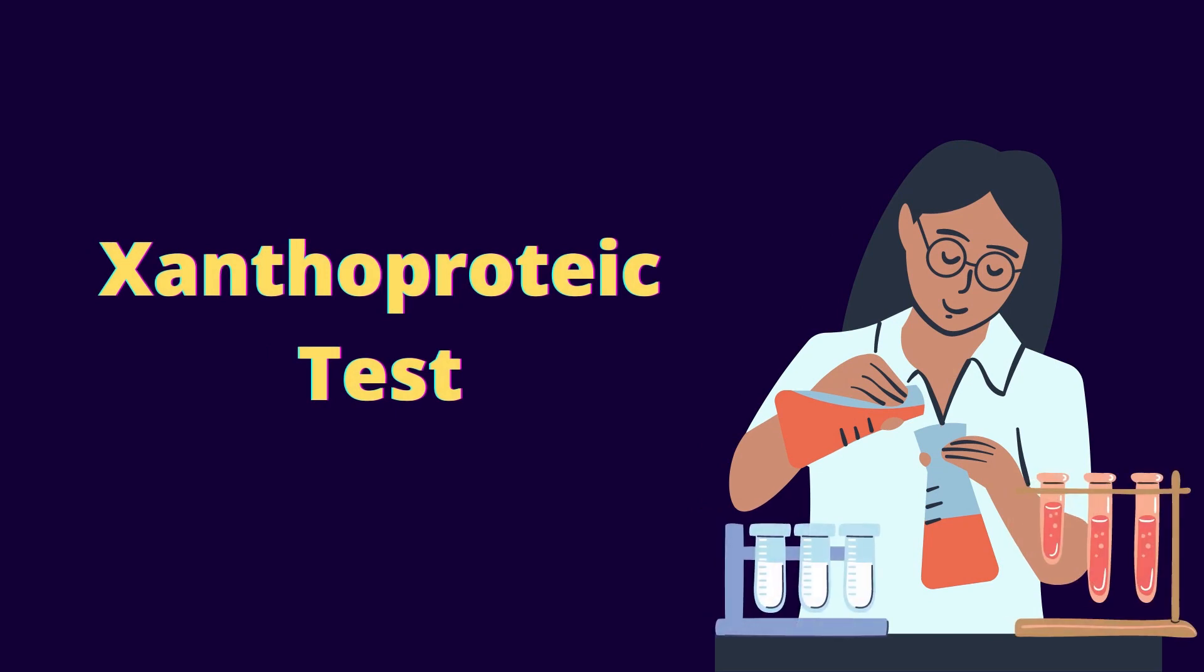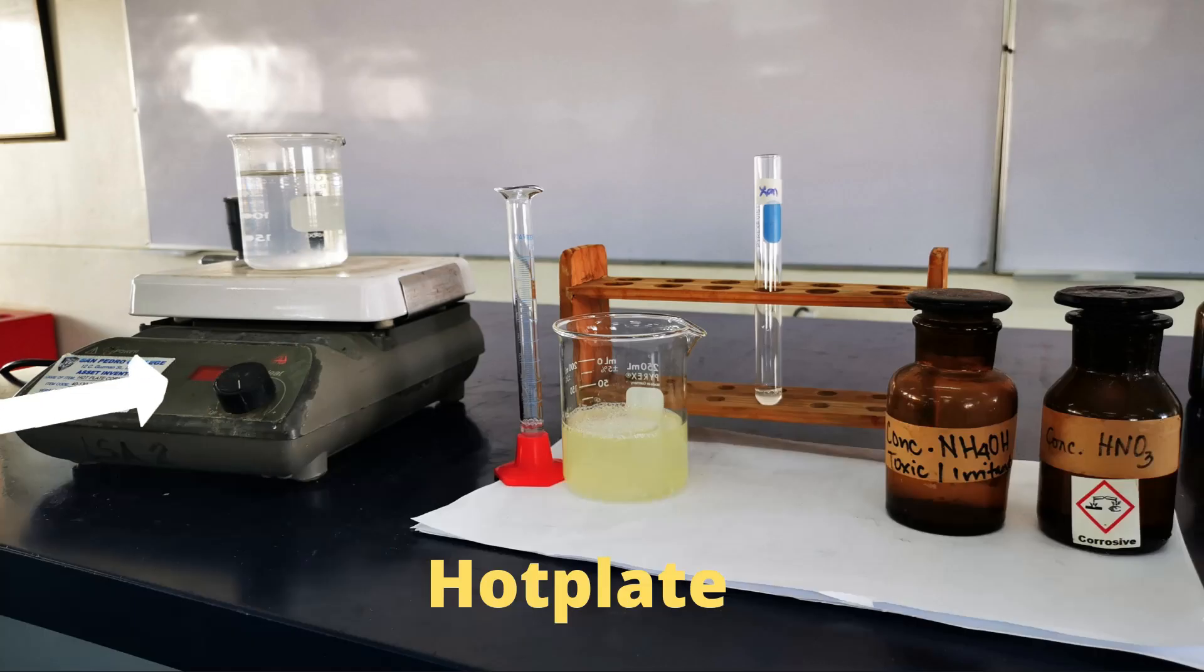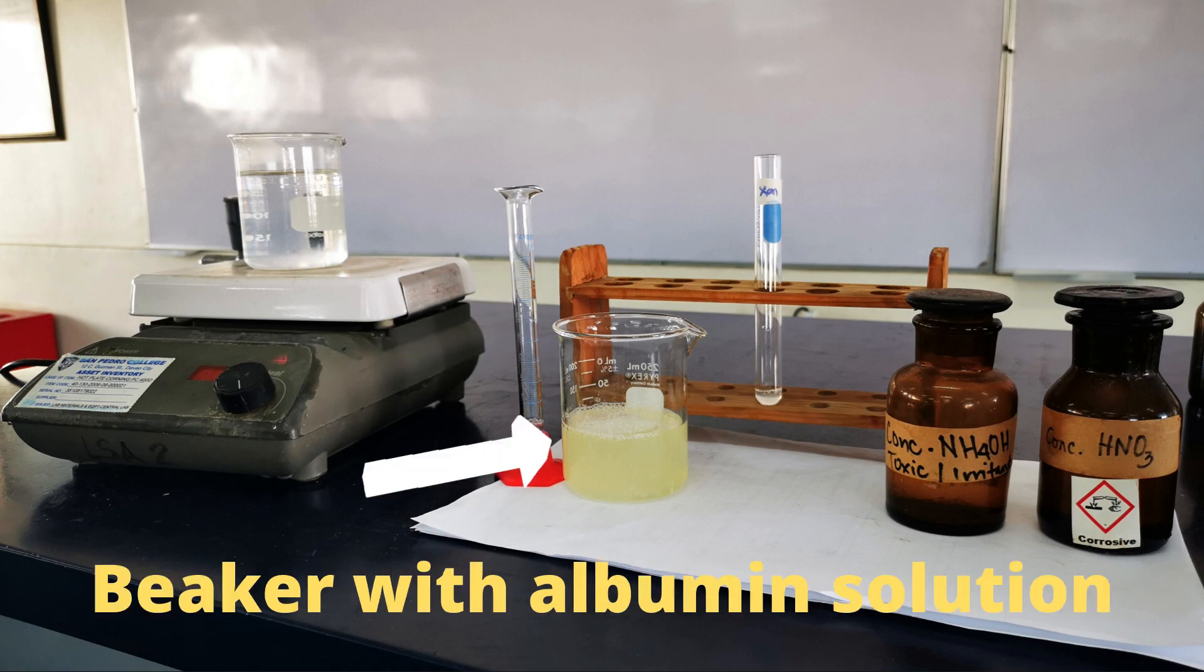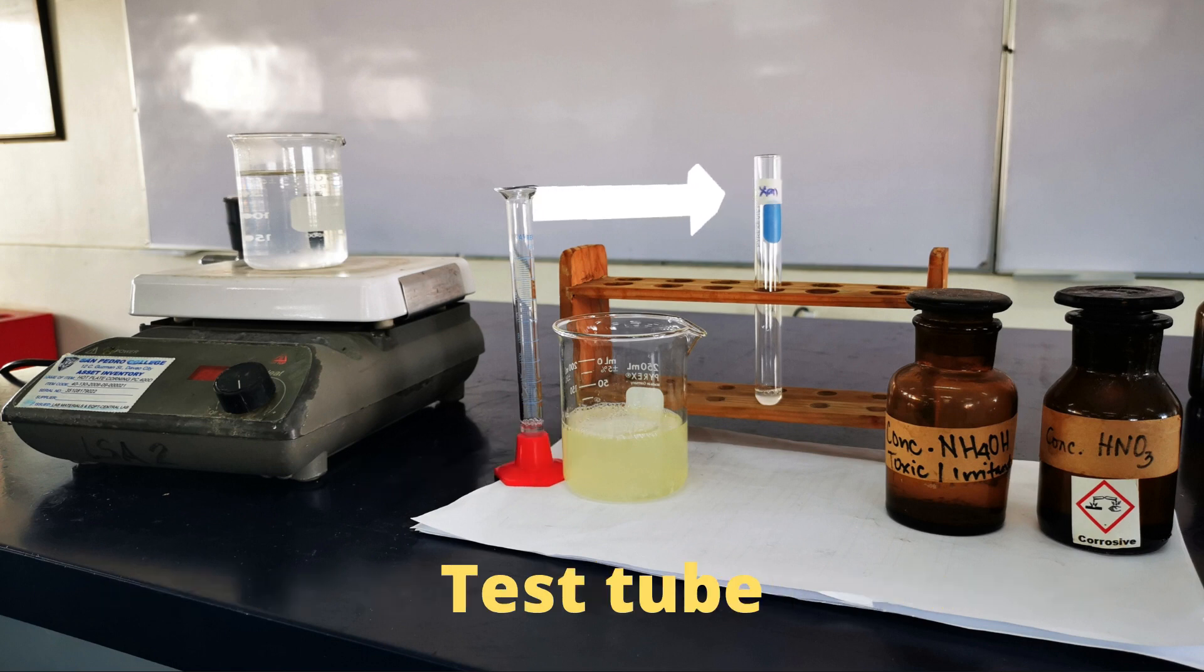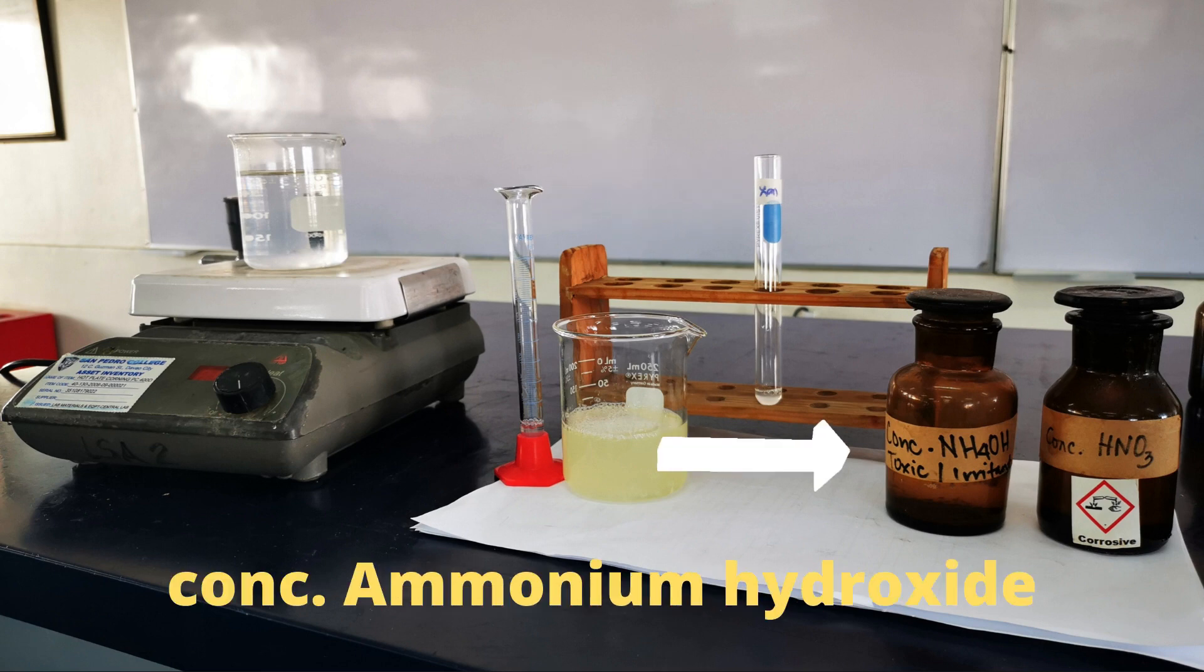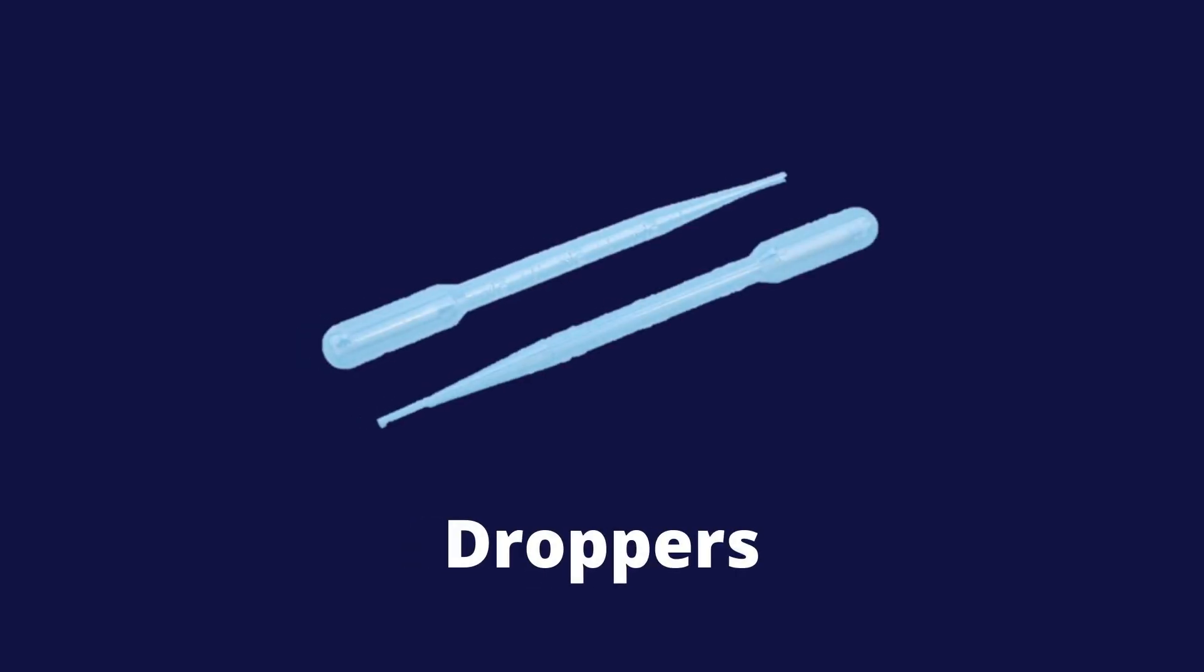Let's start with the xanthoproteic test. These are the materials and reagents for xanthoproteic test: hot plate, graduated cylinder, beaker with albumin solution, test tube, test tube rack, concentrated ammonium hydroxide, concentrated nitric acid, droppers, and label tapes and markers.